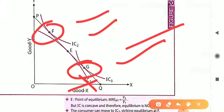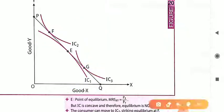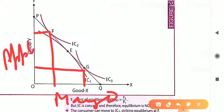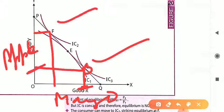A question arises: why is a consumer getting two different points of equilibrium under the same conditions with Rs 60? A consumer will always gain equilibrium at one point, but these conditions may differ according to the consumer. Suppose we have two goods — mango and apple. If a consumer likes mango more, he will go for point G, getting more mango at good X. If a consumer likes apple more, he will go for point F, getting more apple. It depends on consumer preference.